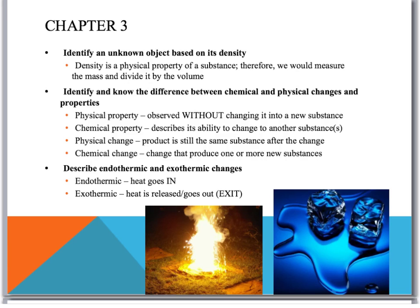Still in chapter three here, we're going to identify an unknown object based on its density. And we have worked pretty extensively here with mass divided by volume. That is one formula that you will be expected to memorize on this test. Identify and know the difference between chemical and physical changes and properties. So we start with physical property. That's going to be observed without changing it into a new substance. A chemical property will describe its ability to change to another substance or substances. Sometimes, of course, we have multiple things produced.